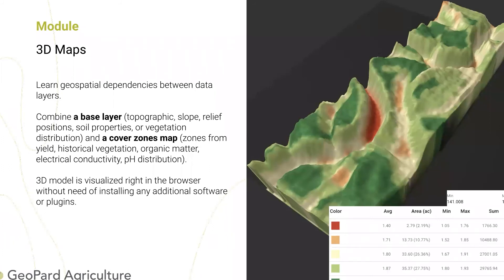Also in Geopard, directly in the browser, you can create — or the platform creates on your behalf — 3D maps. You can rotate, zoom in, zoom out, and exaggerate your topography. Instead of topography, you can choose any other data layer — for example, a detailed pH map or organic matter map — and see the highs and lows of organic matter, then overlay yield data on top. It is a great tool for research purposes and helps you understand your fields in detail.